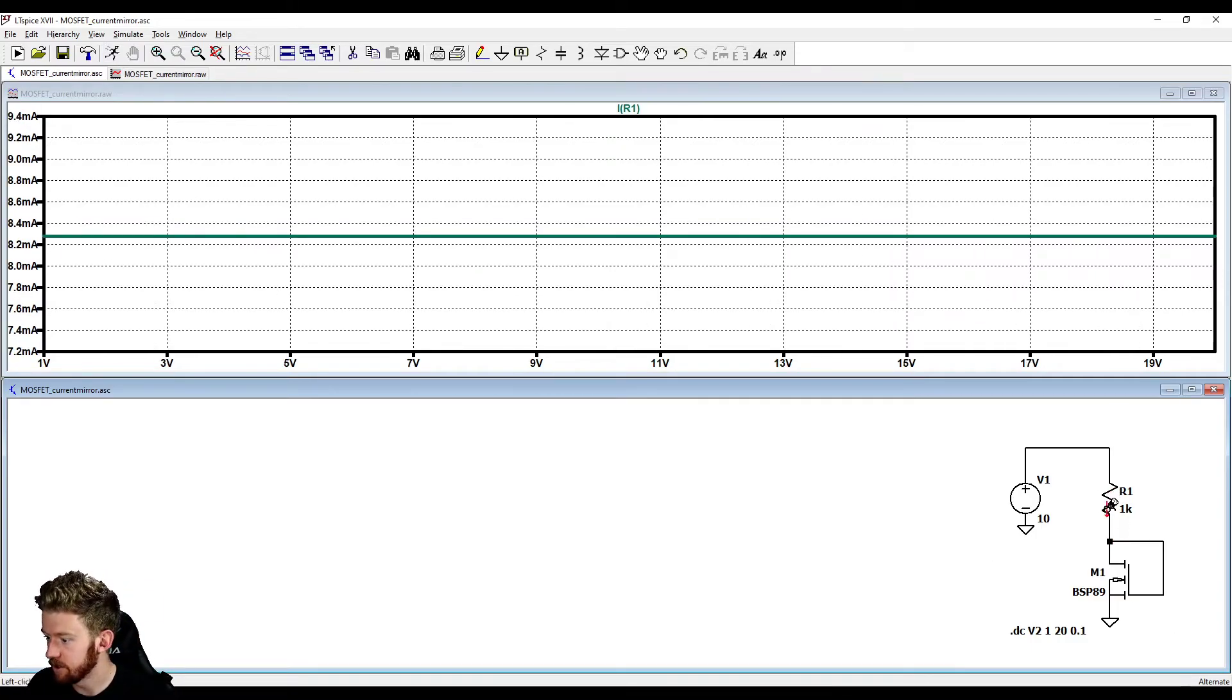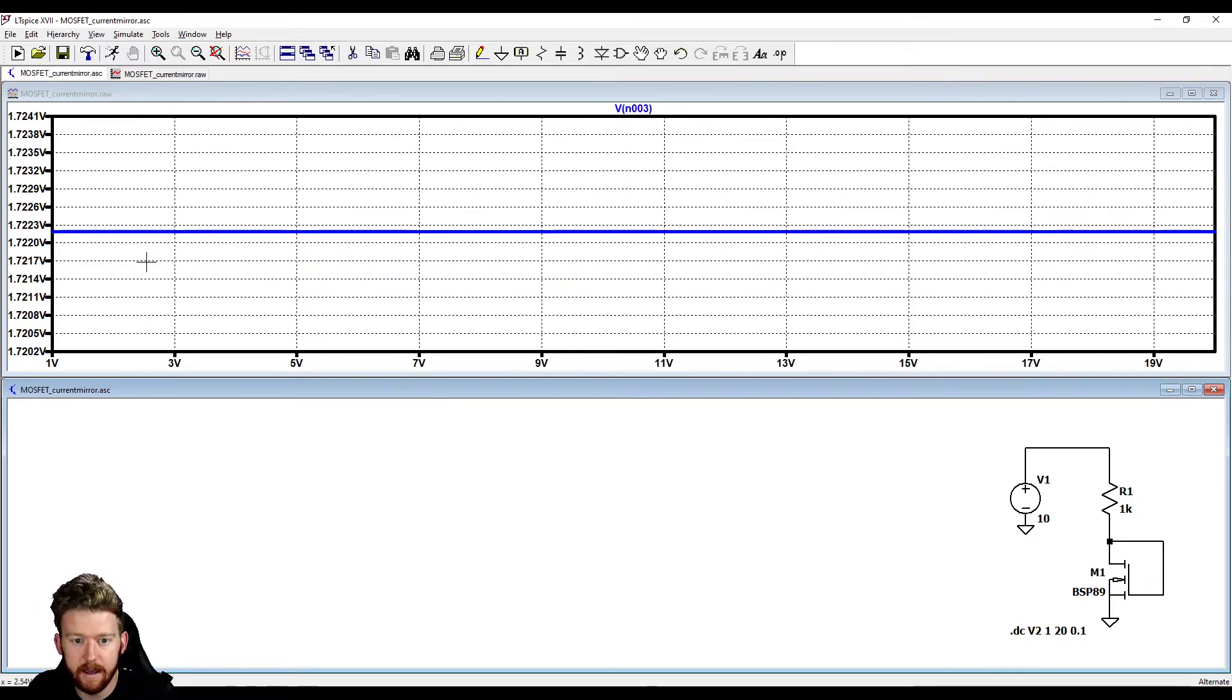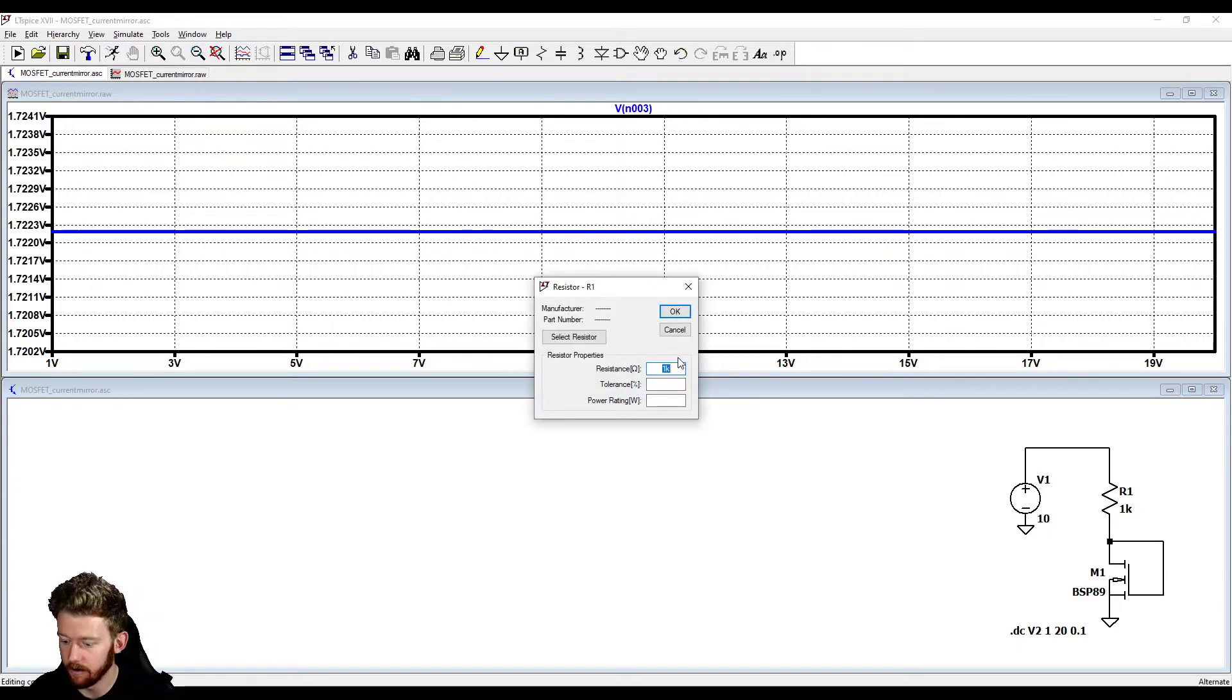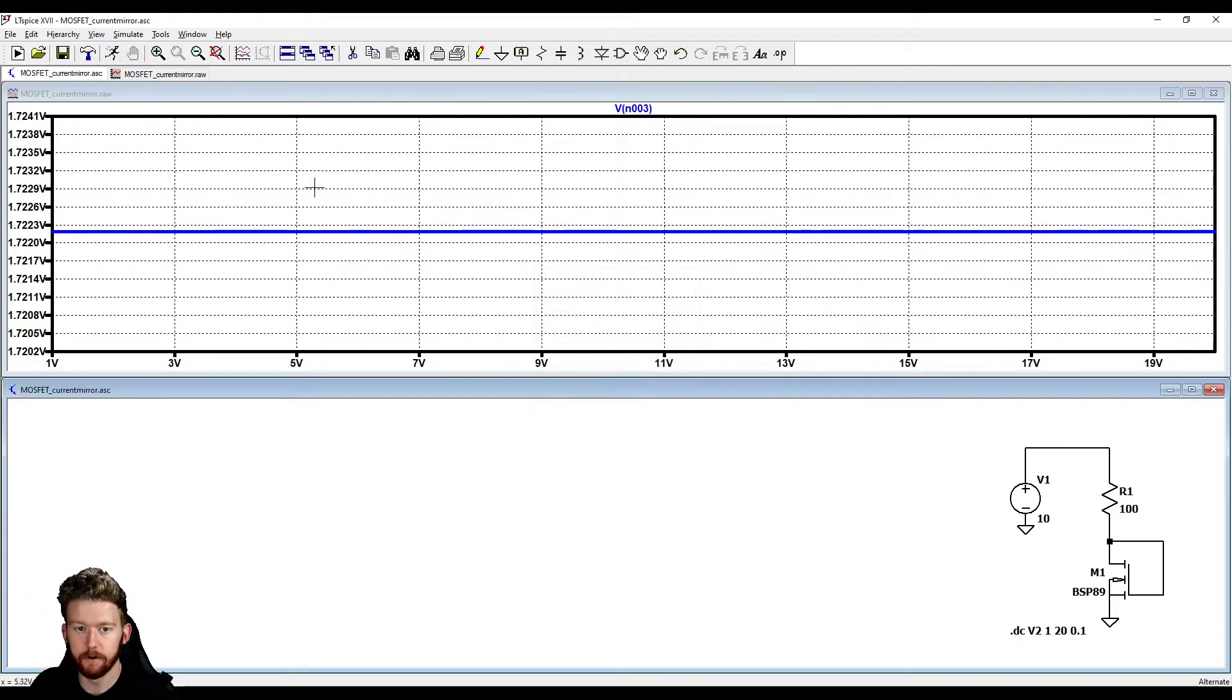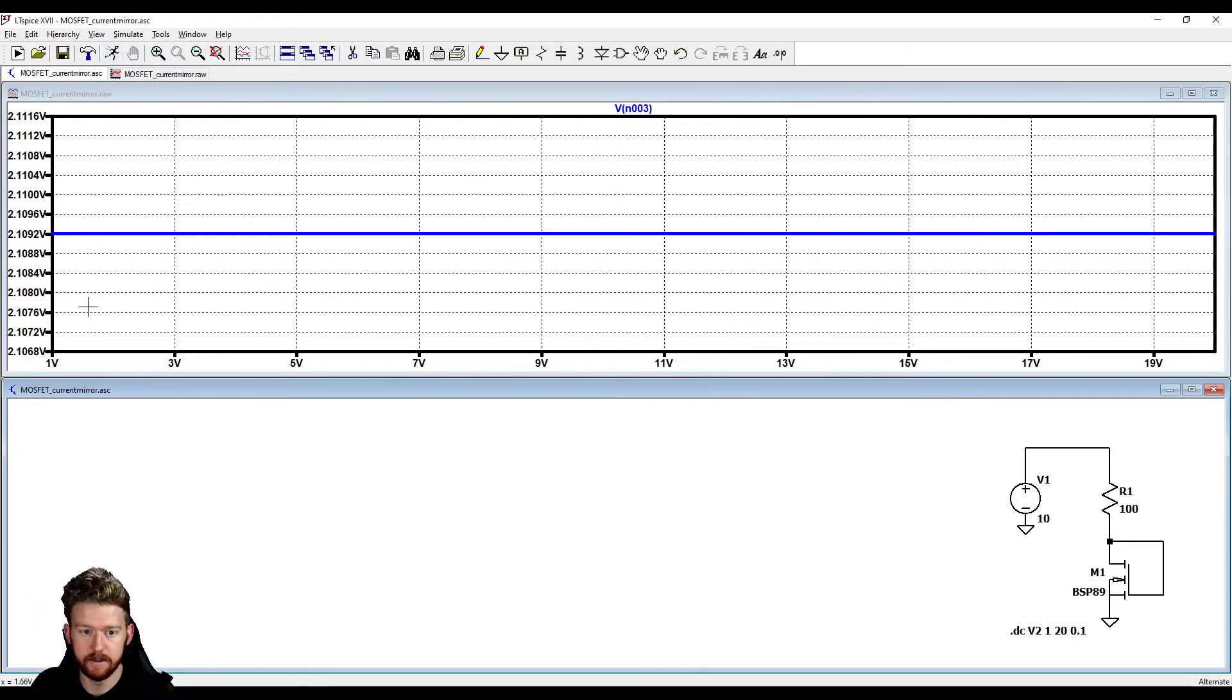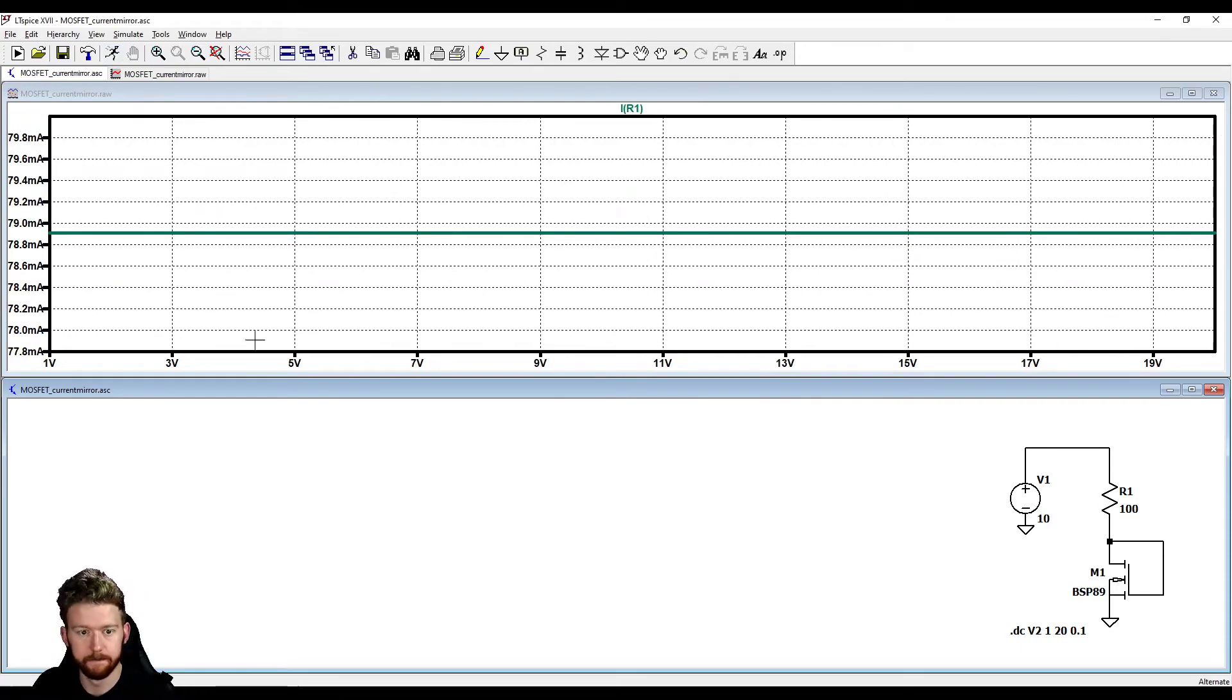So changing just this resistor we can change the current flowing through this MOSFET and you can see that it's going to make that gate voltage exactly what we need. So if we want to push a little bit higher current like if we want to go to 100 ohms then we're going to expect this gate voltage to be a little bit higher and we can see that it definitely is and now we are pushing about 79 milliamps.